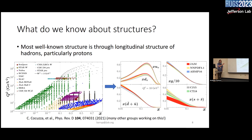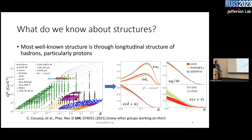Let me introduce what we know about structure. The most well-known is the longitudinal structure of hadrons, specifically for the proton — the most studied. This kinematic plot shows Q-squared, the invariant mass of the virtual photon squared, versus x, the Bjorken variable, which at leading order is like the momentum fraction of quarks within the proton. There is a wide variety of data: DIS in green, Drell-Yan, jet data, W and Z boson production all go into global analysis for protons.